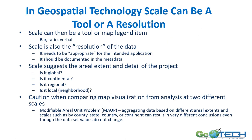Scale can be a technology, a tool, or a resolution. We talked about different scales as a tool or map legend item — a bar, ratio, or verbal scale. It can be a resolution of the data and needs to be appropriate for the intended application, documented, and should match the needs of the project and the analysis to be undertaken. If you're looking at global issues, one scale is appropriate, all the way down to local or neighborhood large scale maps. Also, when comparing map visualizations from analysis at two different scales, look at the modifiable area unit problem. Aggregating data based on different aerial extents and scales — such as by county, state, country, or continent — can result in very different conclusions even though the data values do not change.